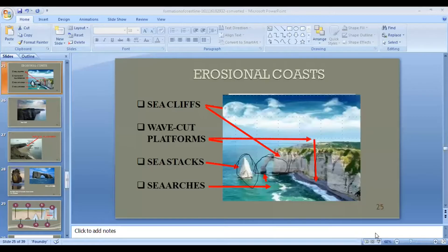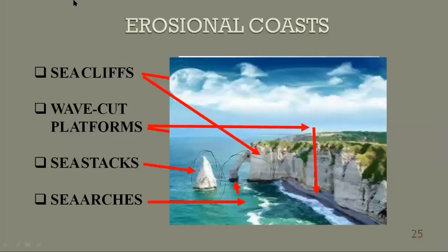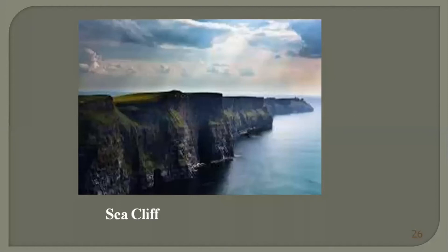We also have sea stacks — arcs that have become disconnected from the main cliff. Here we have sea stacks and sea arcs. If part of a sea arc breaks down, that can form a new sea stack. Here is another example of a sea cliff where there is no sandy part and the rock directly touches the water. This is another example of erosional coastal landforms.